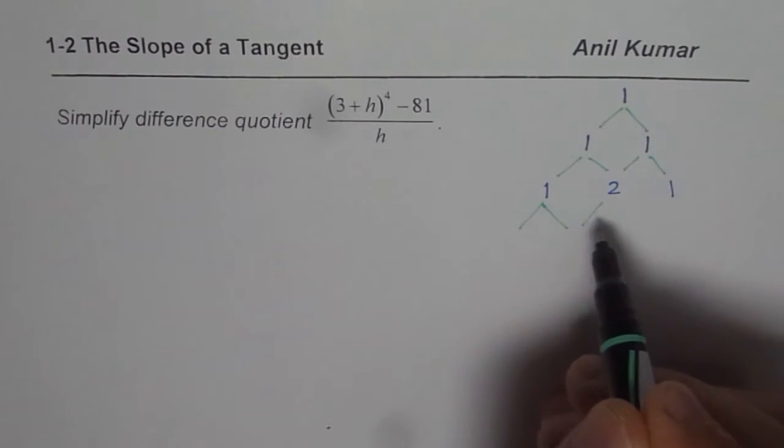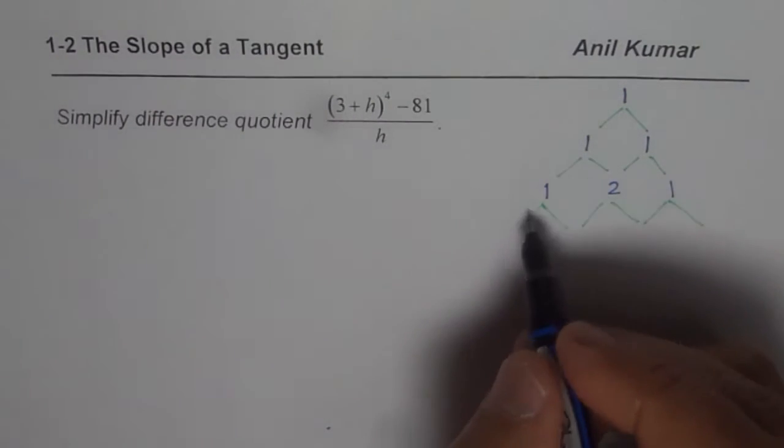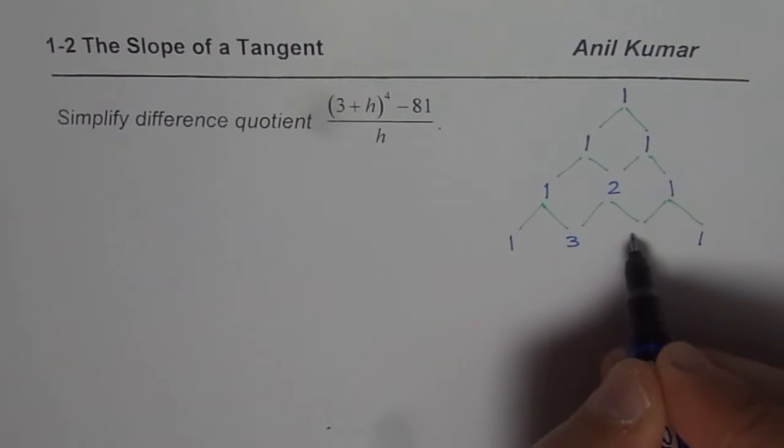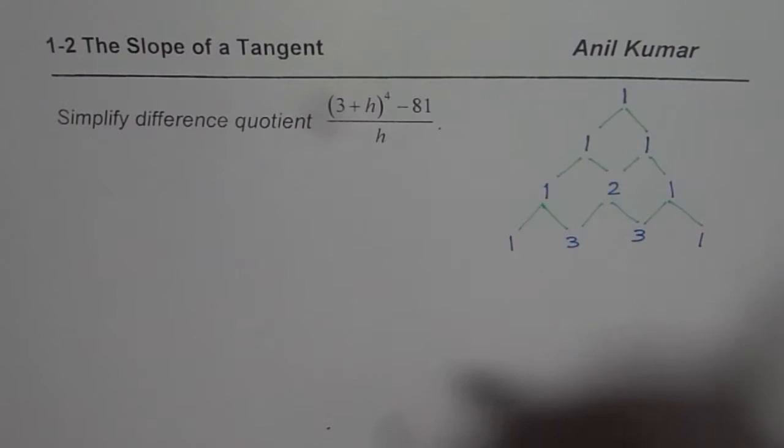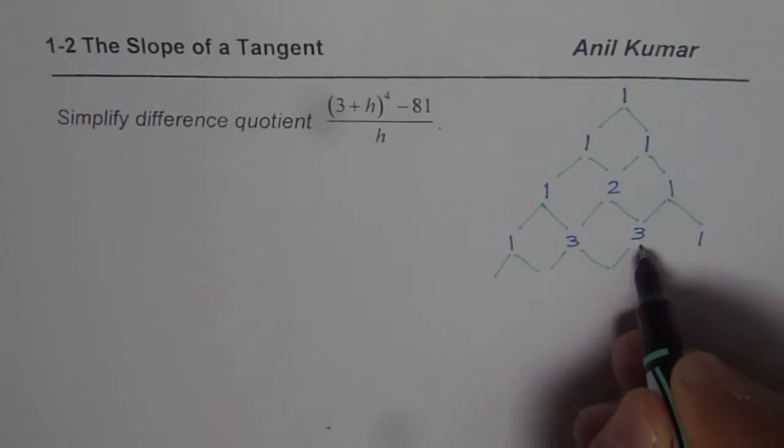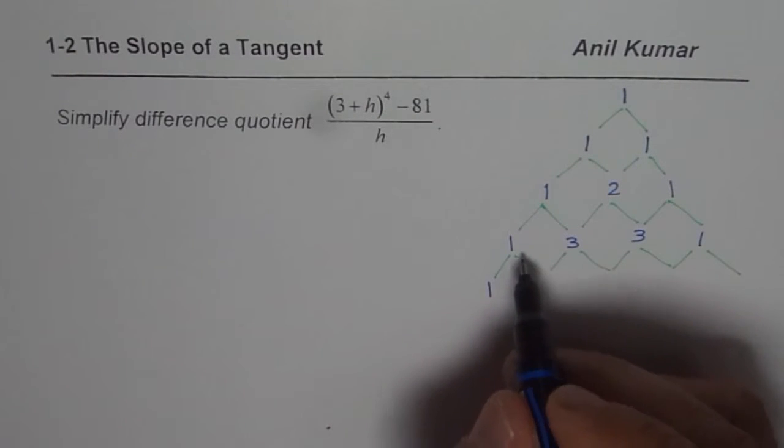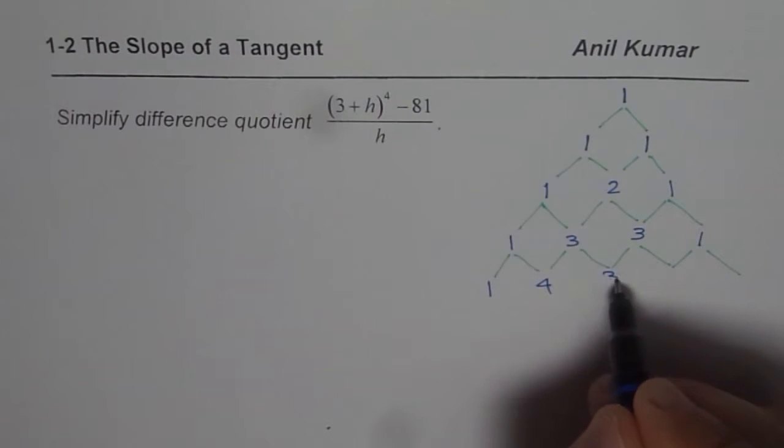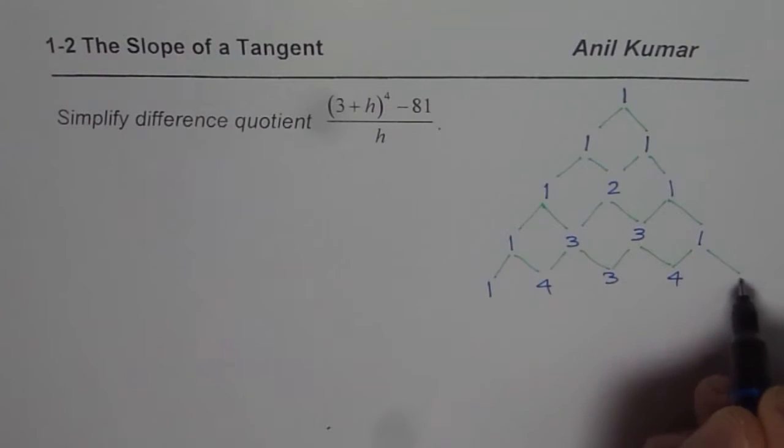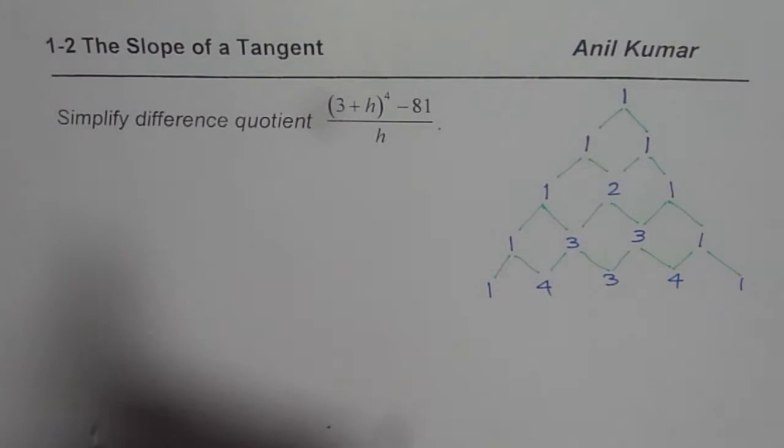So then now we are in the third row. In the third row, we get ends are always 1. Combine 2 plus 1, 2 plus 1 is 3. And let's move further. Now since the degree we are looking for is 4, we have to go for the fourth row. So 1 plus 3 is 4, 3 plus 3 is 6, 3 plus 1 is 4, and 1. So these are the coefficients which will help you to expand the numerator.